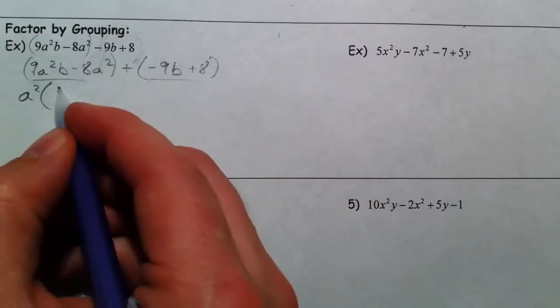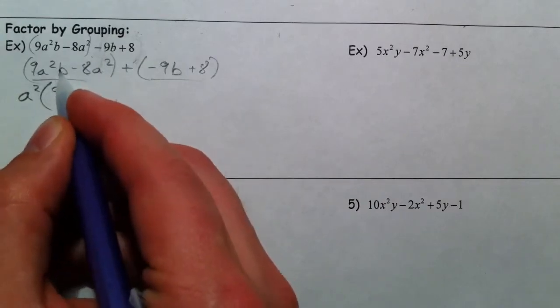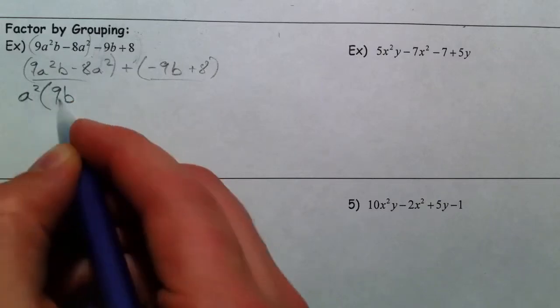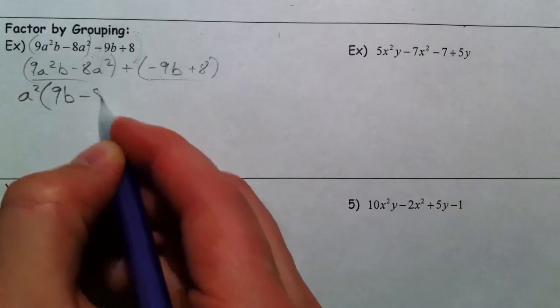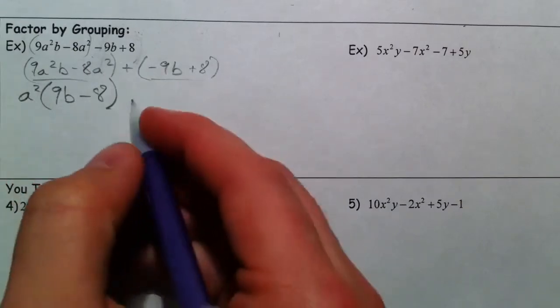The 9 is left and the b is left after you divide out a squared. Because remember, if we put it back in, we get 9a squared b. And the 8 is left, and we took out the a squared, we divided it out, so that's what's left.